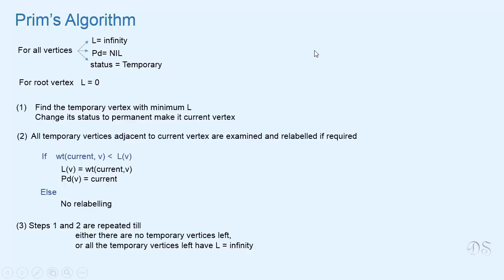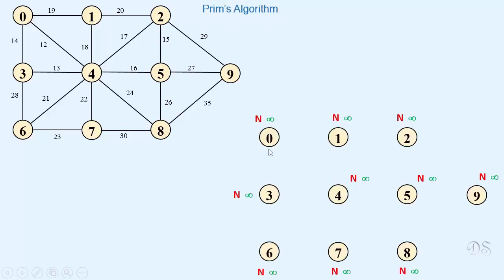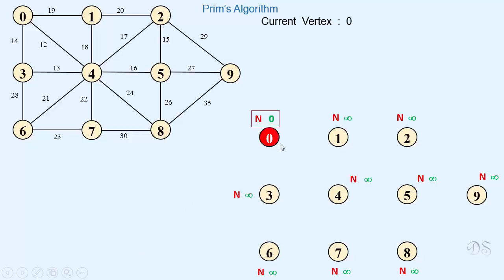In the next video, we will understand the whole procedure with the help of an example. Initially, all vertices are temporary, length of all vertices is infinity, and predecessor is nil. We will take vertex 0 as the root vertex. The first step is to make the length of the root vertex 0. From all the temporary vertices, we select the one with minimum length — vertex 0 — and make it permanent. Now this is our current vertex, so we will examine all temporary vertices adjacent to vertex 0.